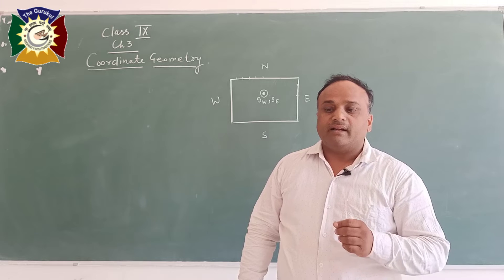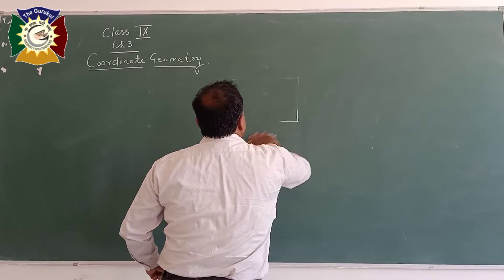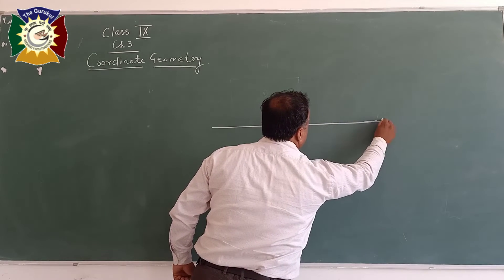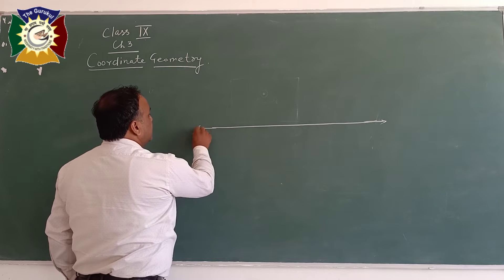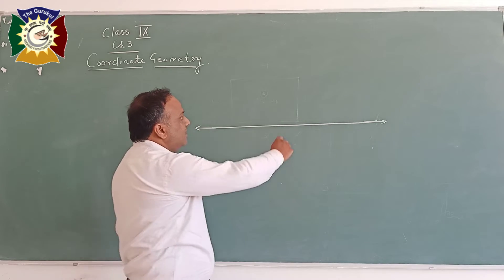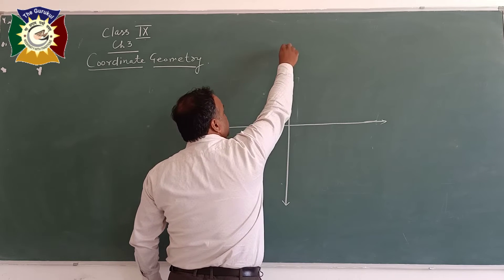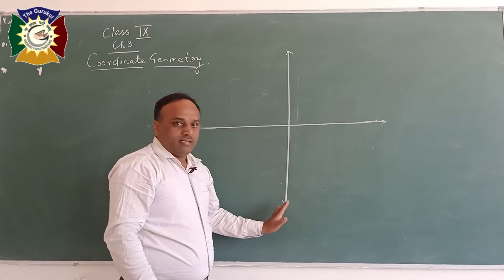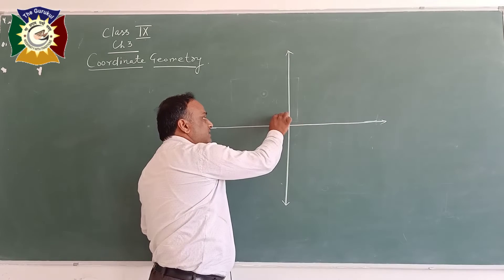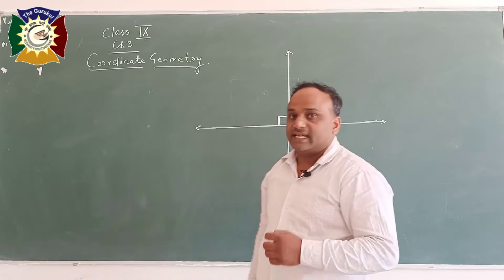It is given by René Descartes, the French mathematician. How he had given it - he has taken two lines. One line is horizontal, and this line is just like the number line we have taken in the number system. And the second line is vertical. These are perpendicular to each other. Perpendicular means this angle is 90 degrees. These two lines René Descartes has taken at that time.